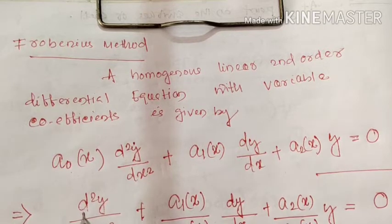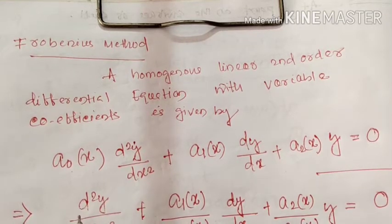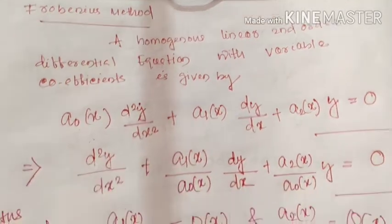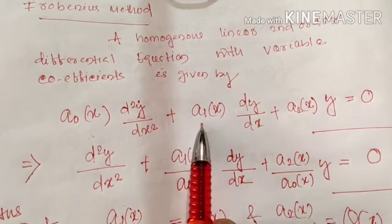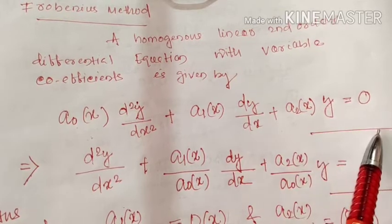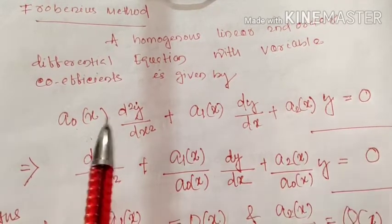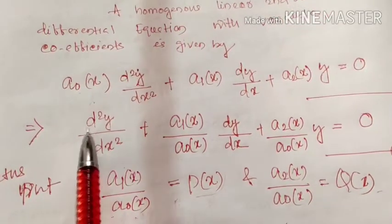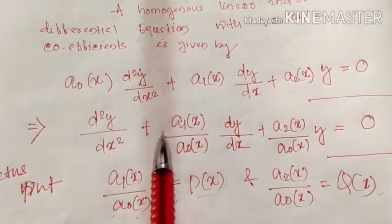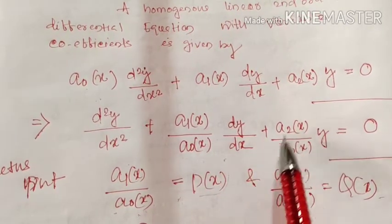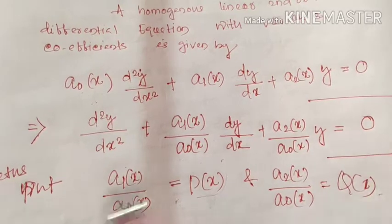The equation is a₀(x) · d²y/dx² + a₁(x) · dy/dx + a₂(x) · y = 0. Now dividing by a₀(x) on both sides, we get d²y/dx² + [a₁(x)/a₀(x)] · dy/dx + [a₂(x)/a₀(x)] · y = 0.